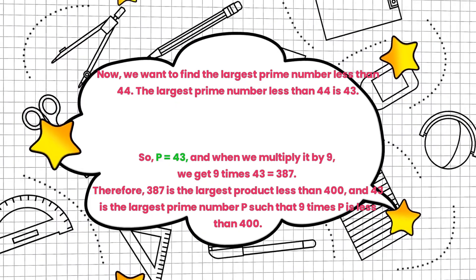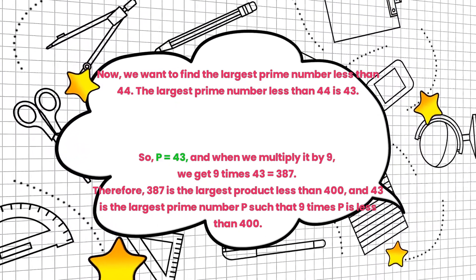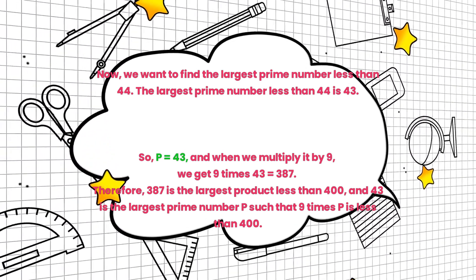Now, we want to find the largest prime number less than 44. The largest prime number less than 44 is 43.